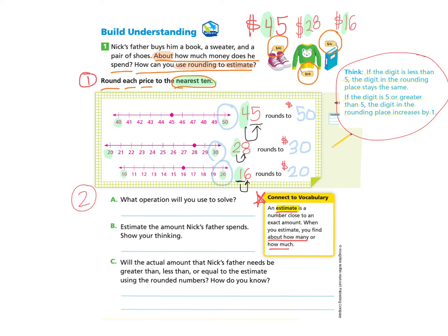How are you going to take those three numbers and put them together? We will need to put them together using the operation of addition. Let's take a look at part B. Estimate the amount Nick's father spends. Show your thinking.